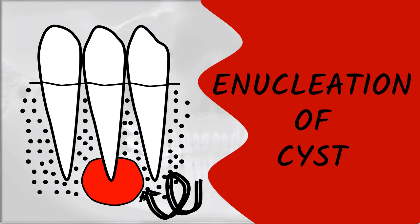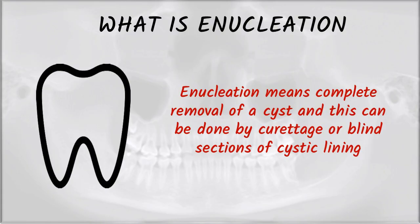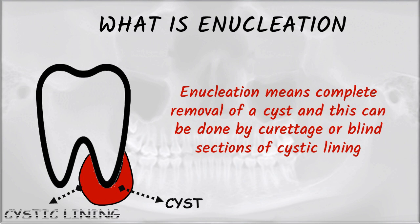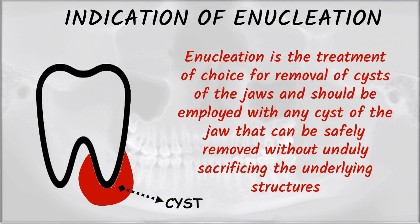What is enucleation of cysts? Enucleation means complete removal of cysts, and this can be done by curettage or blind section of cystic lining. Look at the figure — this red shaded area represents the cyst, and the lining which surrounds the cyst is called the cystic lining.